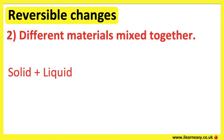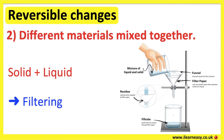Filtering: this process consists of moving a mixture through a filter, which can usually be a paper filter containing small holes. When the mixture is poured through the filter, the liquid passes through the filter and the solid does not pass the filter.